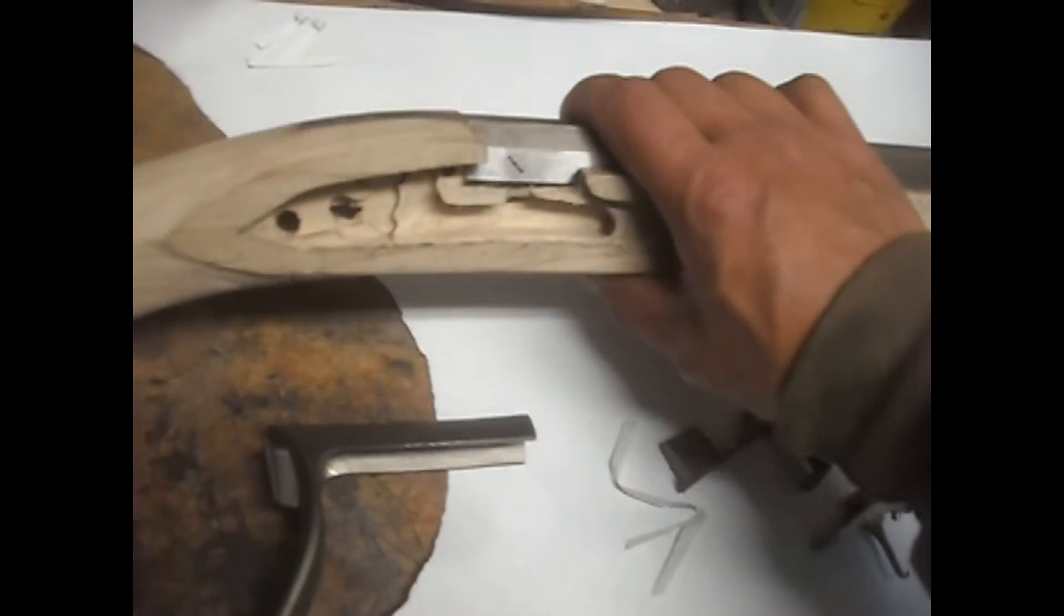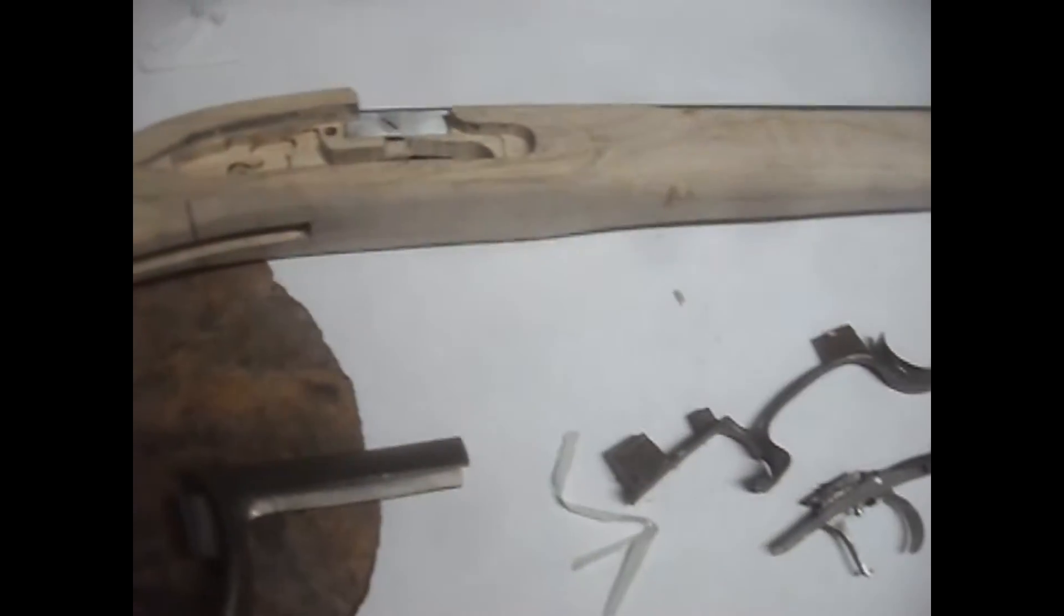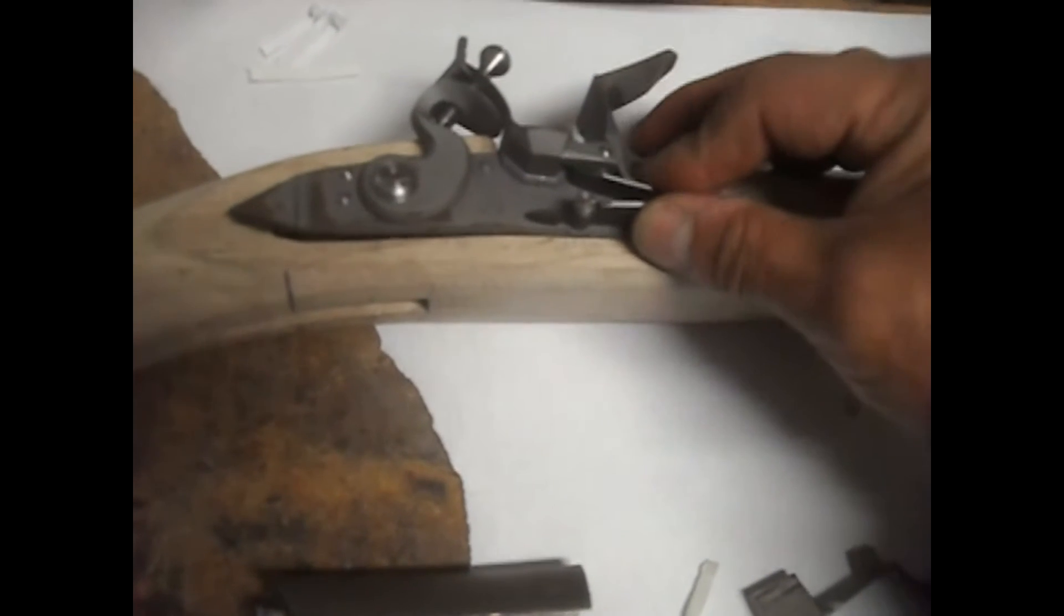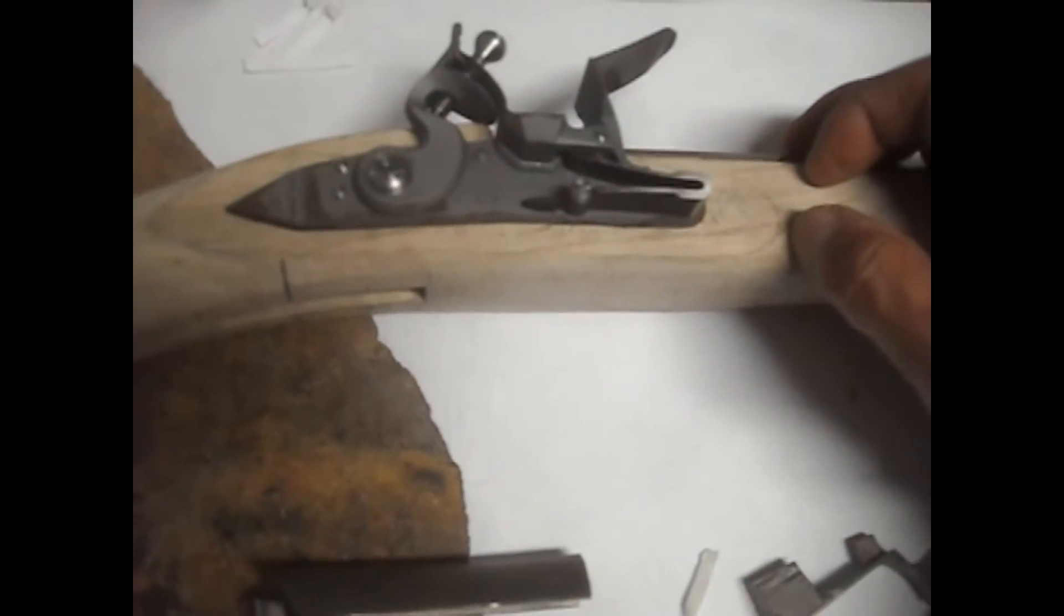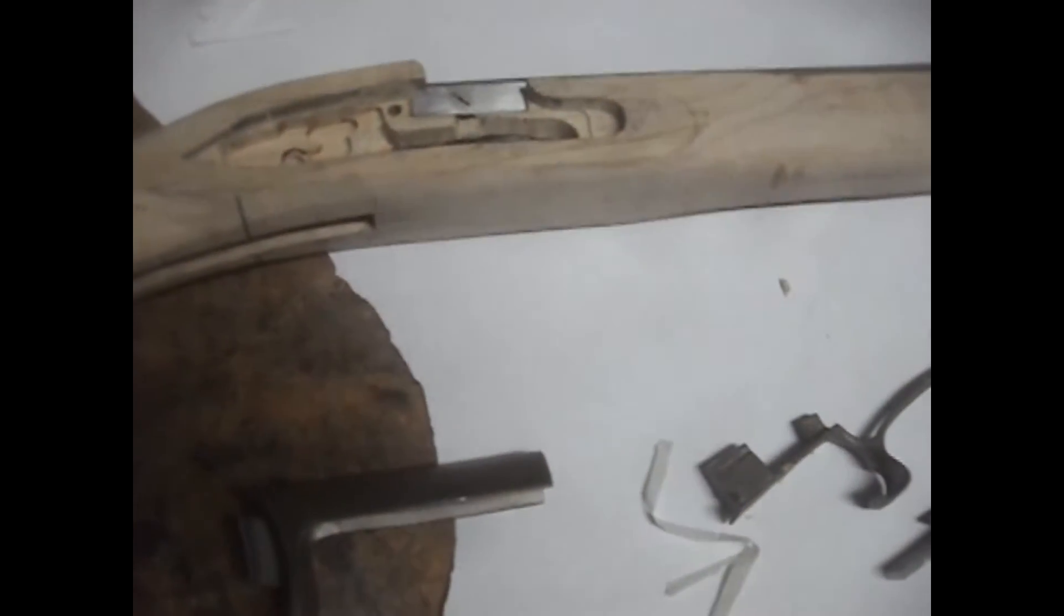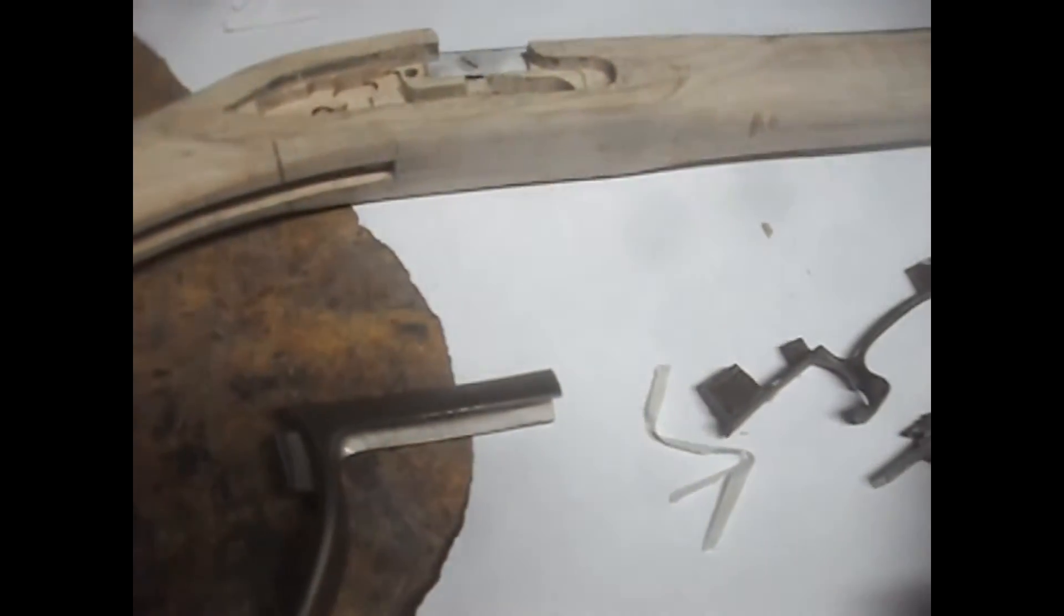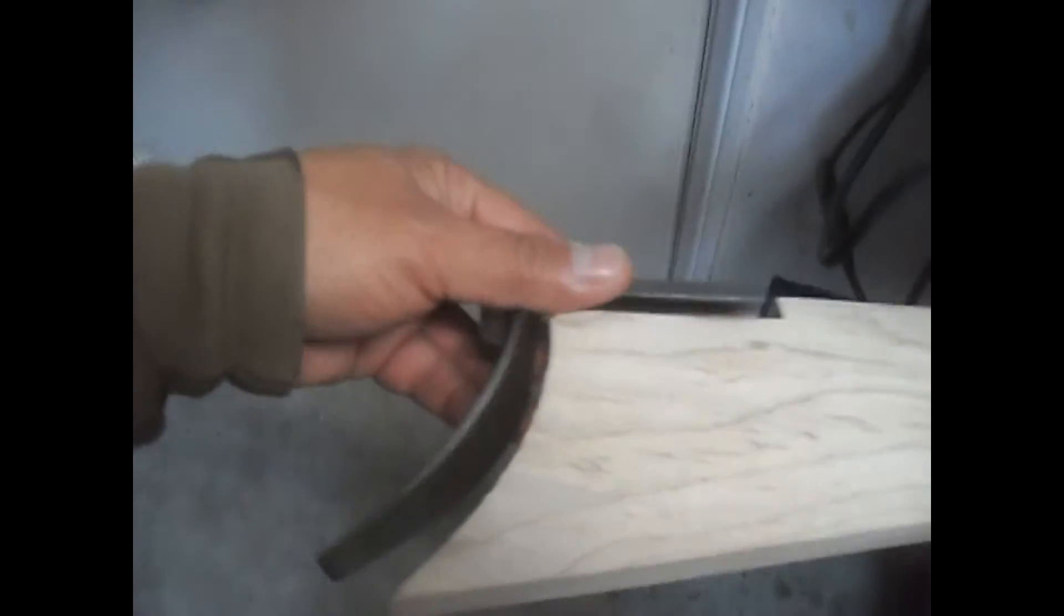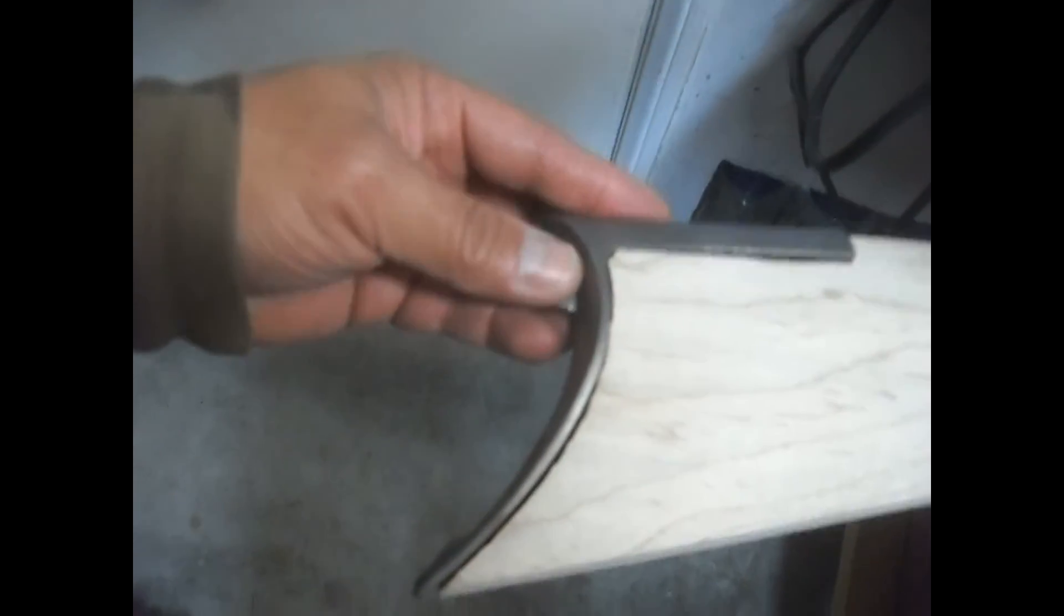It looks like also the lock is 100% inletted as well, so that's a good thing. This is a kit gun, so not all of the inletting will be complete. Like with the buttstock here, it's cut in but it's still got some work to do as far as getting it inletted.